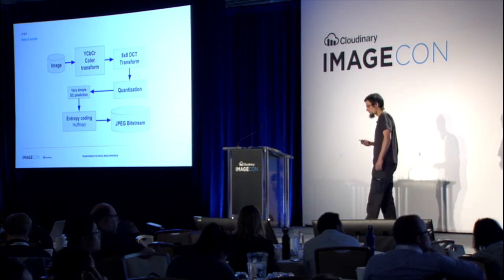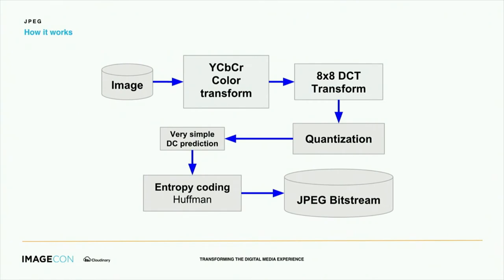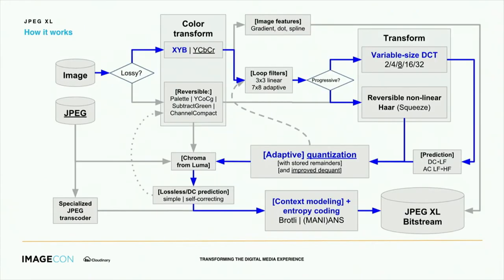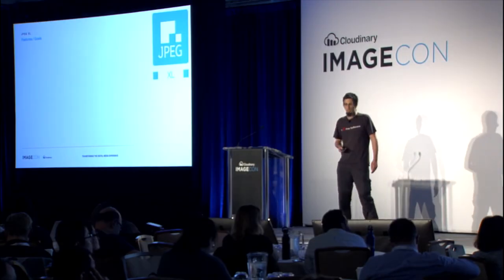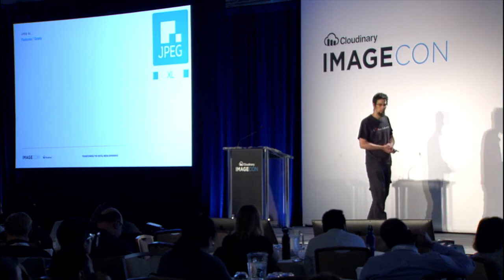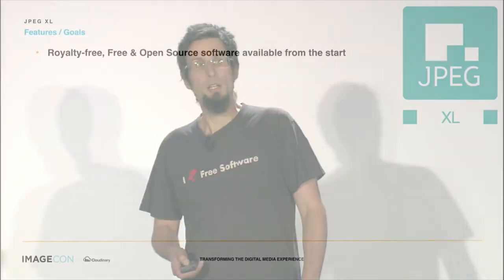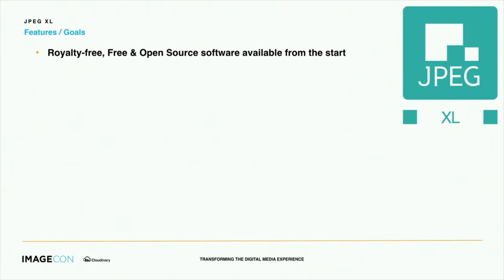This is a high-level overview of how JPEG XL currently looks like. It's a work in progress so this may change, but this is what we currently have in mind. The first goal — something very important to both Cloudinary and the Google team — is to create a royalty-free codec that has a free and open source implementation available right from the start. We think this is a crucial thing for an image codec to be successful.